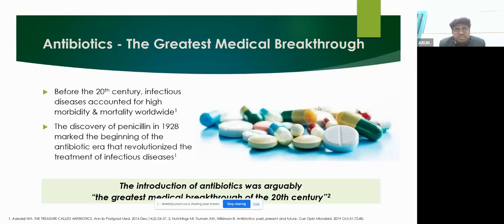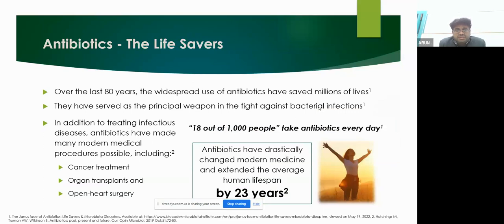Once antibiotics were introduced, how did they affect your gut microbiota? How does the gut microbiota get disrupted? Antibiotics are the life savers. Over the last 80 years, the widespread use of antibiotics has saved millions of lives, not only for your gastrointestinal system, but also for your liver, respiratory, and cardiovascular systems. Antibiotics have a huge role across many areas.